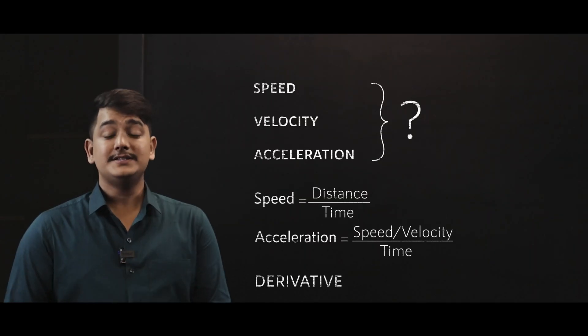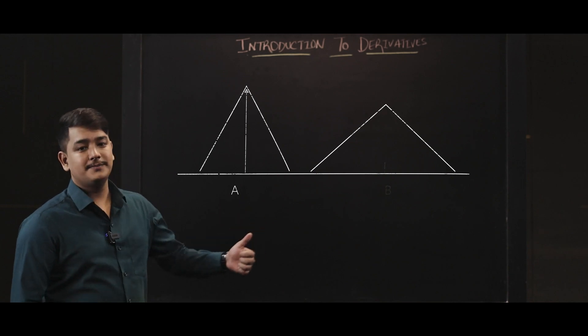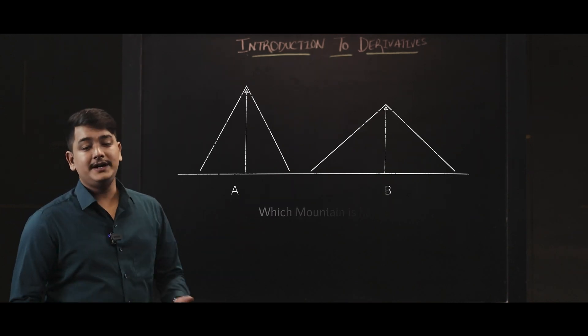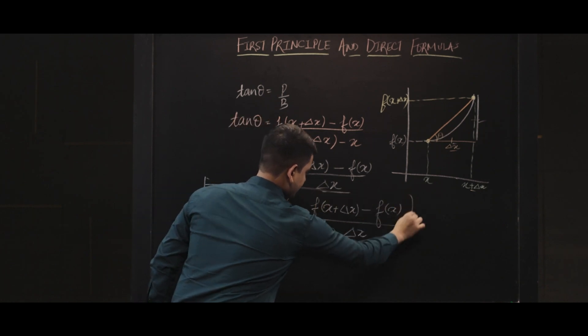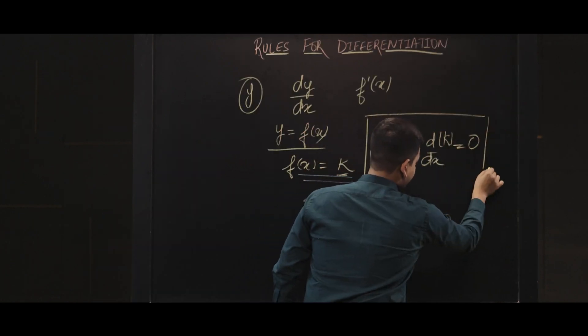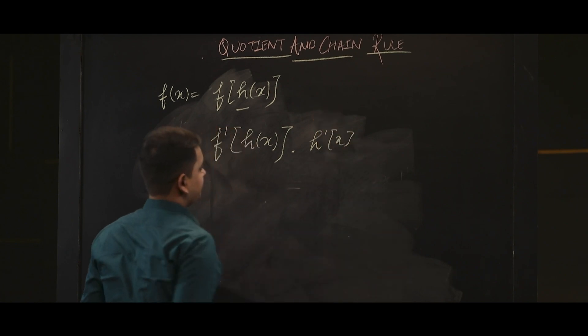In this course, we will be learning in depth about differentiation and each and every aspect related to this concept. We will be starting our journey with an introduction to derivatives, where we will learn what derivatives actually are and how they are significant for us. Moving further, we will be learning the first principle and some direct formulas for derivatives, then concluding the section by learning a few rules that apply to differentiation: the product rule, chain rule, and quotient rule.